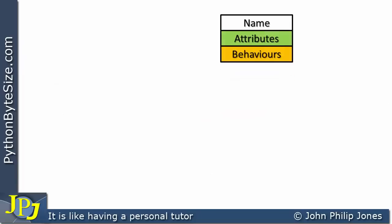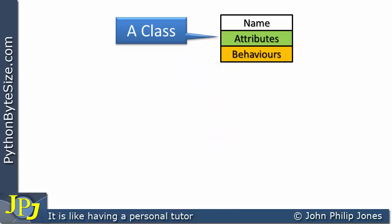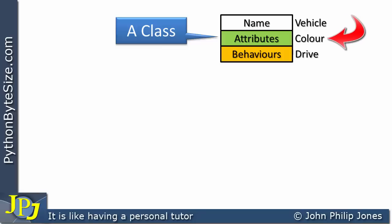If we go forward with our diagram, we can see a class has a name, attributes, and behaviors. As a programmer, we can use the classes of others — other people have produced classes that we can simply use — or we can create our own classes. To get a feel for what a class is: a typical class name could be 'vehicle' — a car, a lorry. An attribute of a car could be its color, and a behavior is something it can do, like drive.